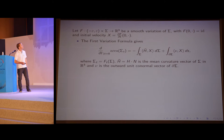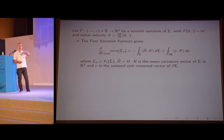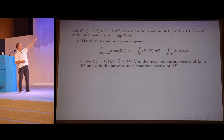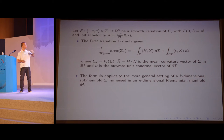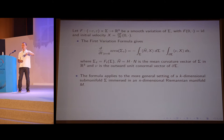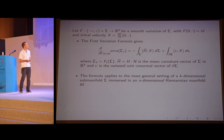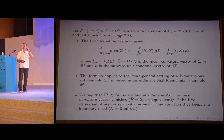The first variation formula tells you what the first derivative of the area should be at time 0, along some given variation with initial velocity given by a vector field X. The right-hand side gives you minus the integral over the surface of the velocity dotted with the mean curvature vector — the normal vector with length given by the mean curvature at every point — plus a boundary term. The exact same formula holds in a more general setting of a k-dimensional submanifold in an n-dimensional Riemannian manifold. In particular, if we restrict to variations that keep the boundary fixed, this derivative is 0 for every X if and only if the mean curvature vector vanishes. That's the definition of a minimal submanifold.